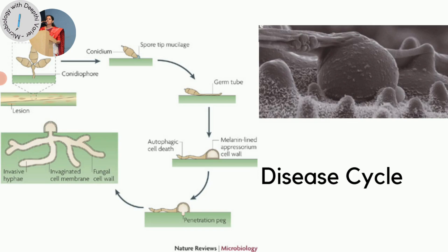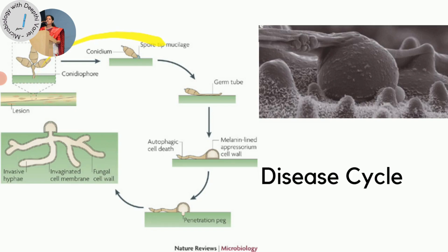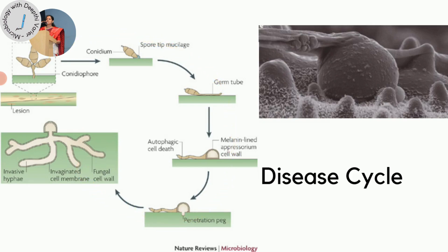Once the fungus has grown within the lesion, conidia and conidiophores are produced. The conidia are then disseminated by the wind, land on a new plant, and the cycle repeats. This is the disease cycle for Pyricularia oryzae.